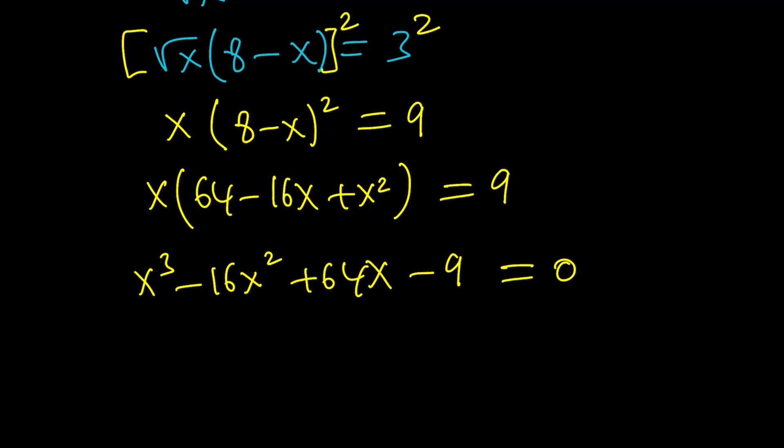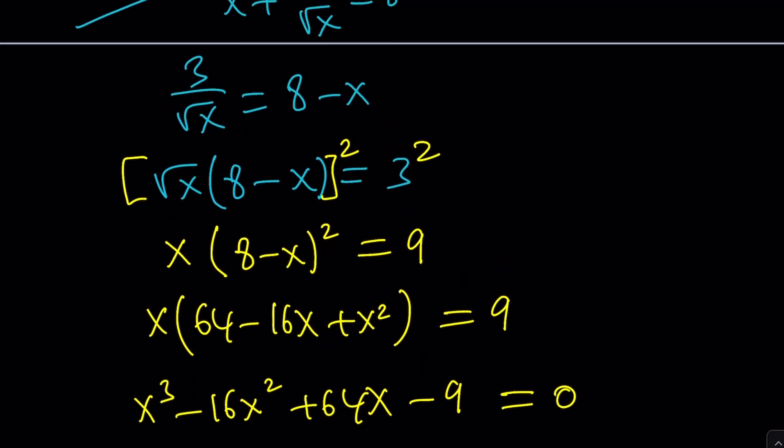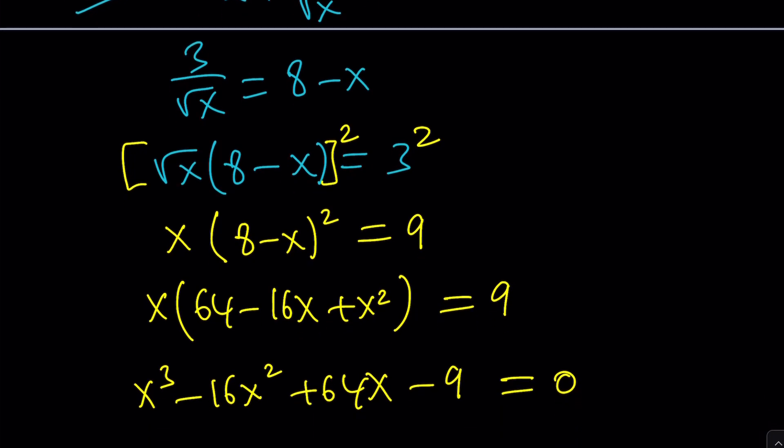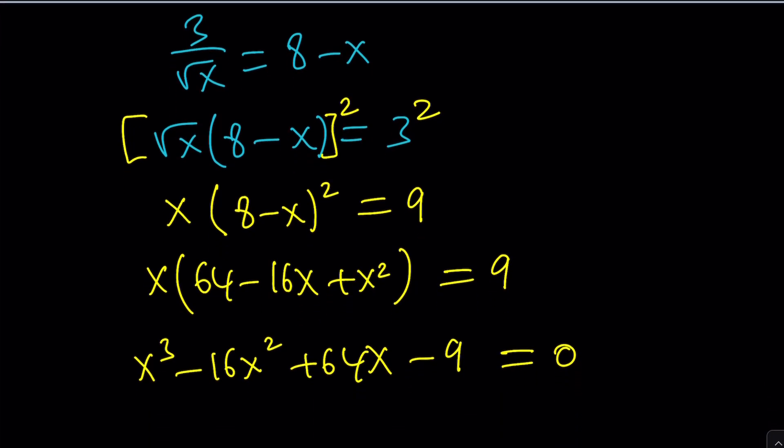When we distribute, we're going to get x cubed minus 16x squared plus 64x minus 9 equals 0. So here's the problem: we ended up with a cubic equation. And how do you solve a cubic equation? First of all, at this point, you could probably look for rational solutions, looking at factors of 9. Could x be 3? Could x be 1? Could x be 9?